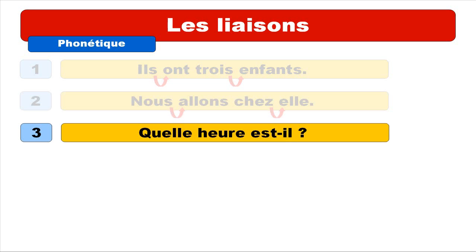Third example: quelle heure est-il? And then let's see how it goes with the liaison. It's actually quite easy to figure, because you get this trait d'union between est and il, so we have to pronounce est-il. As it's a question, it would be better to raise your voice at the end of the sentence, so it would sound like: quelle heure est-il? Repeat: quelle heure est-il?